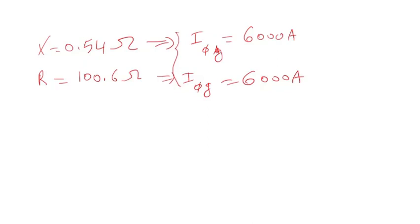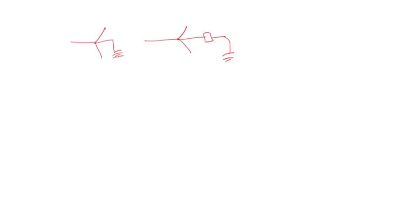That's because the system is mostly inductive, so the reactance dominates. When you add impedances — resistor plus j times X — since the reactive part is dominating, if you add a resistor you will need to add a large resistor to get the same result. Now, when we have the transformer, the high side is effectively solidly grounded, but on the low voltage side, any time you add an impedance — whether a reactor or a resistor — you can impact the effective grounding of the system.